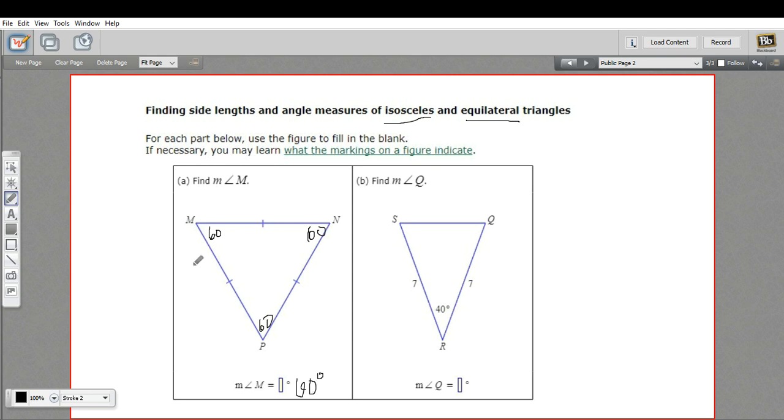Now, if you had to find a side length in an equilateral triangle, let's say they told you that one side was three. Well, both the other sides would be three because all three sides are the same.